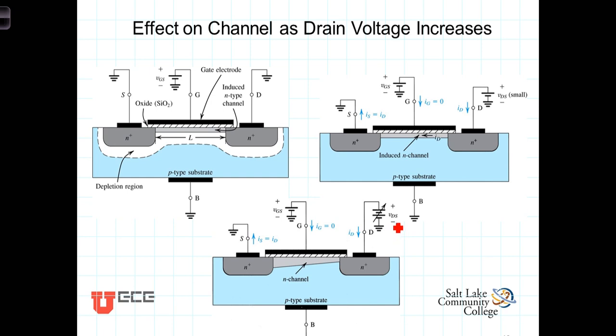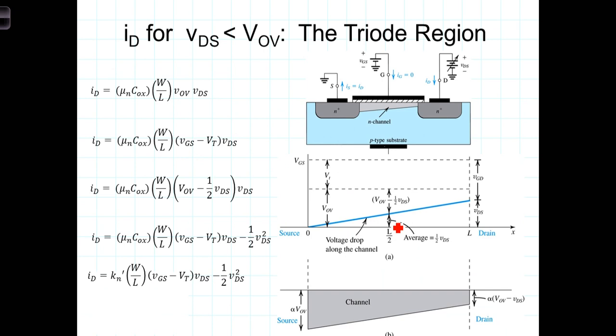So once again, with the drain voltage small, the voltage induced along the channel along its entire length is the overdrive voltage or VOV. The voltage inducing the channel along its entire length is the overdrive voltage, VOV. And the depth of the channel along its entire length is constant and proportional to VOV.